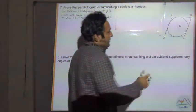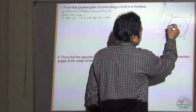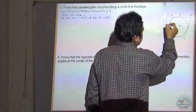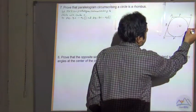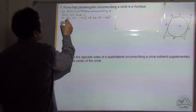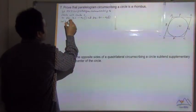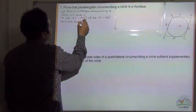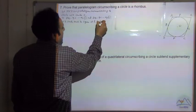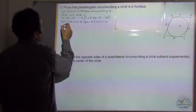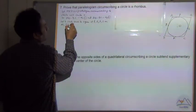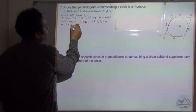Now, circumscribing the circle means that it touches at points P, Q, R, S. So let the circle touch the parallelogram at P, Q, R, S on AB, AD, DC, and CB respectively.